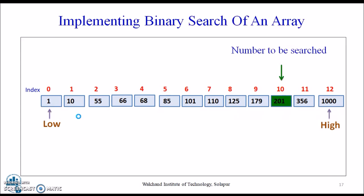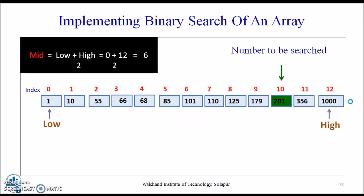We calculate the mid using the formula: mid is equal to low plus high minus low divided by 2. Now here the number to be searched is 201, this is the low, this is the high. Now we compare the value by calculating the mid. So here it is 0 plus 12 by 2, that is 6, integer value of 4.5.